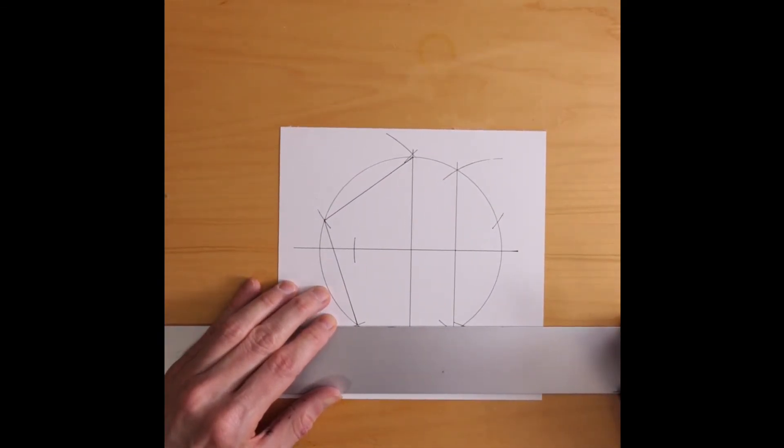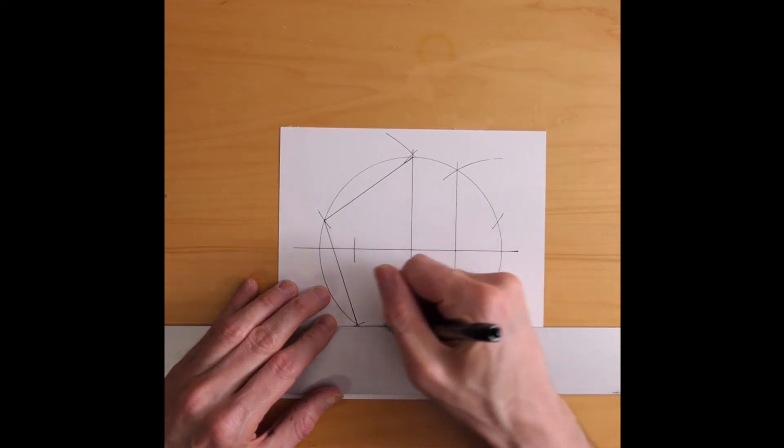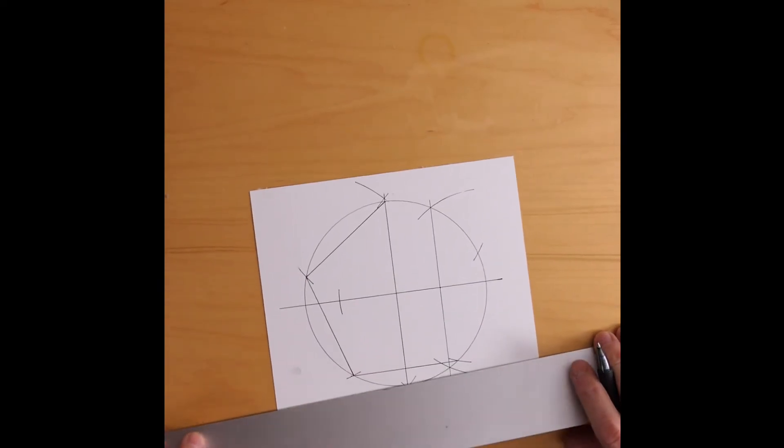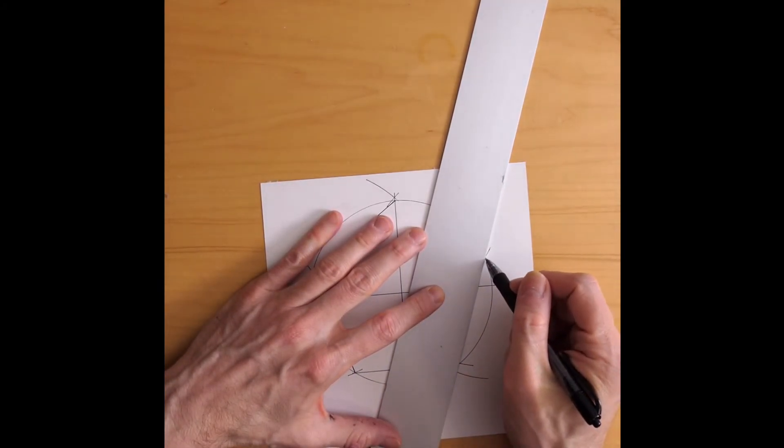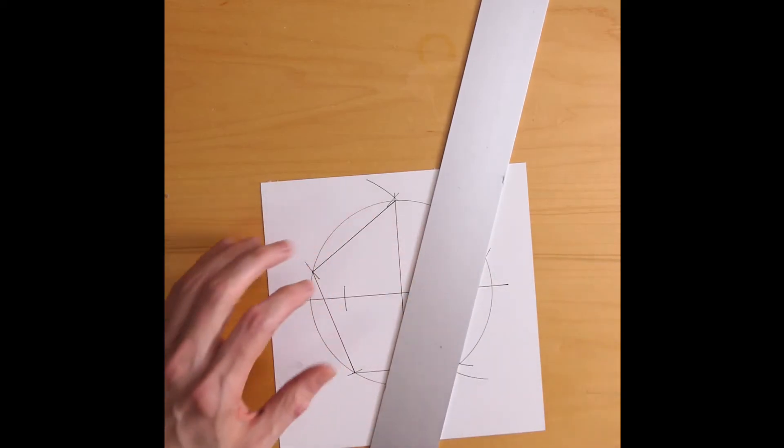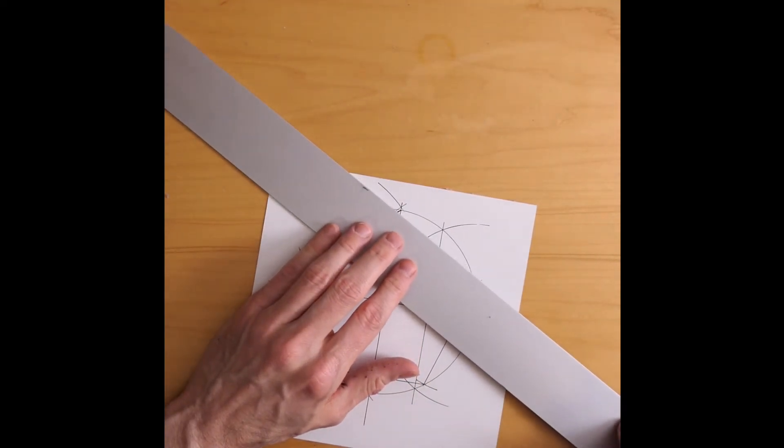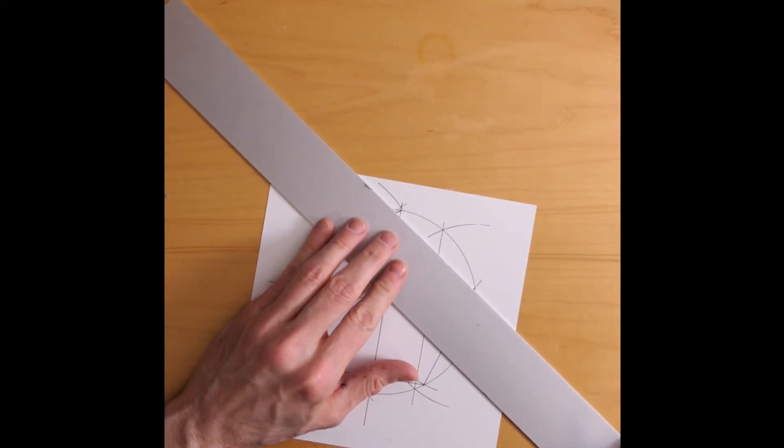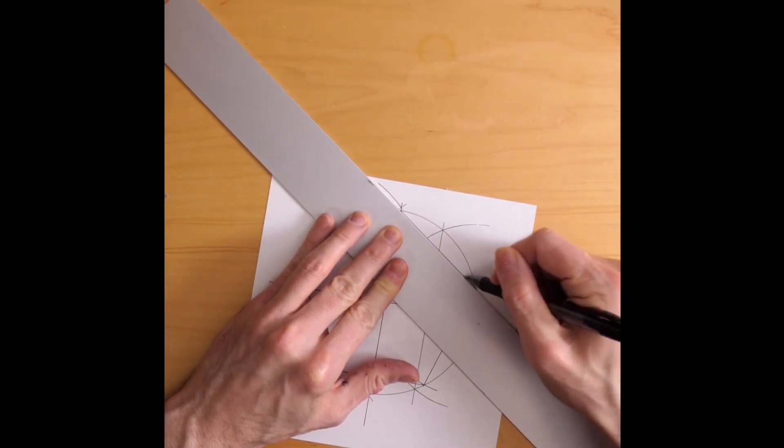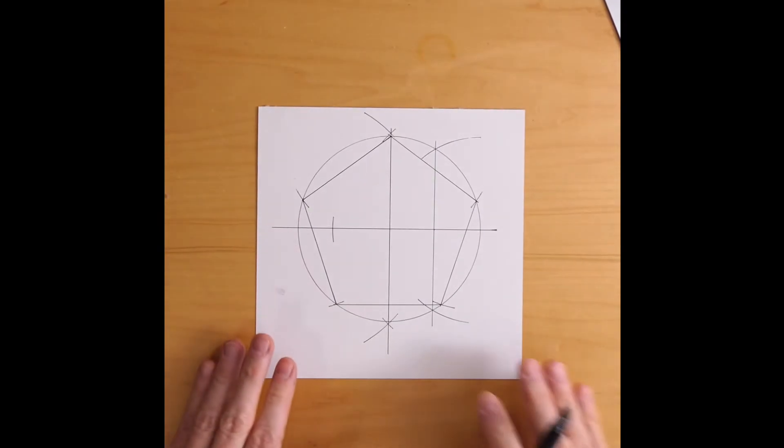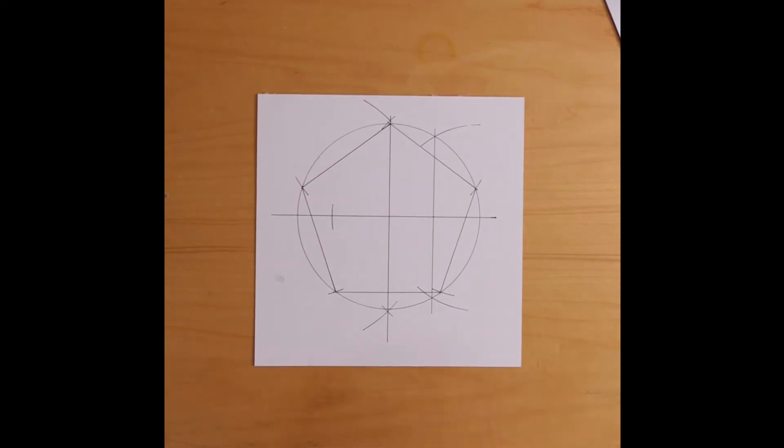That's line number three. Coming up on the right. Line number four. And coming back to where I started. I can close things up and get a true, supposedly, regular pentagon with the construction due to Ptolemy.